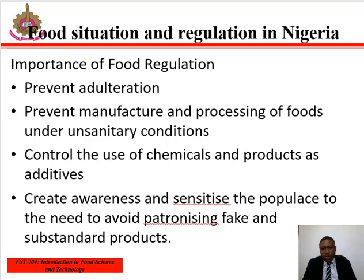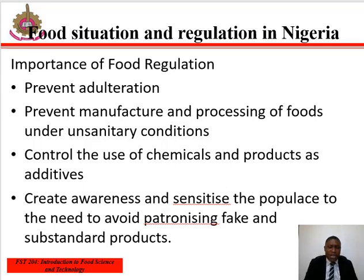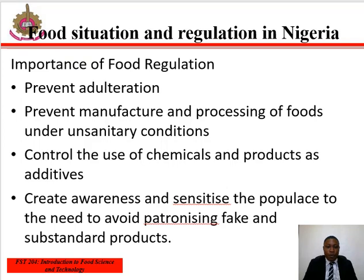What are the importance of these regulation bodies? Examples of these regulation bodies are NAFDAC, the Standard Organization of Nigeria, and the likes. Their importance is: they prevent adulteration, they prevent manufacturing and processing of food under unsanitary conditions, they prevent the spread of microbial infestation, and they also control the use of chemical products as additives.